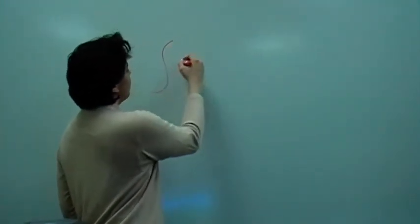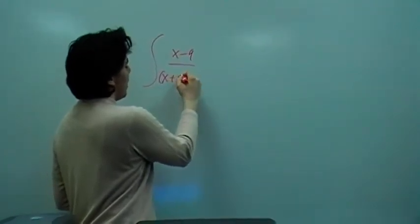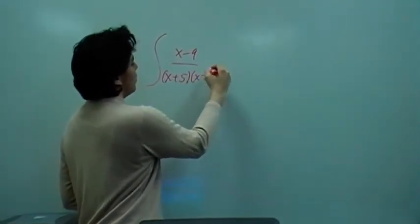Okay, this is the integral we want to be solving today. It's going to be the integral x minus 9 over (x plus 5)(x minus 2) dx.